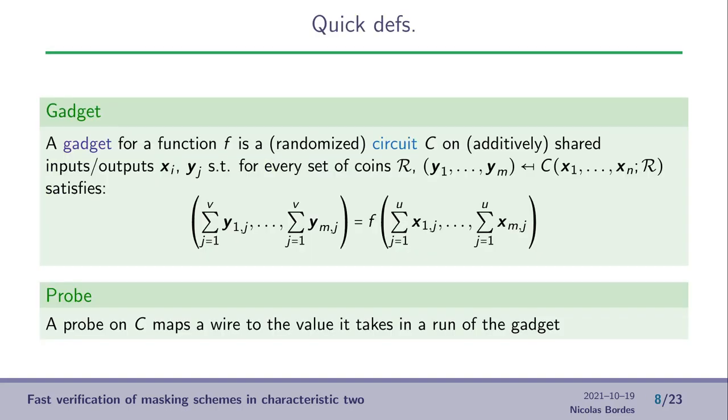So first, some quick definitions. What we call a gadget for a given function f is in fact a circuit that is working not on the input of f directly, but on the sharing of the inputs. And this circuit is also outputting a shared version of the result. The circuit itself is described as arithmetic gates and also some special gates providing additional uniform random values during the computation.